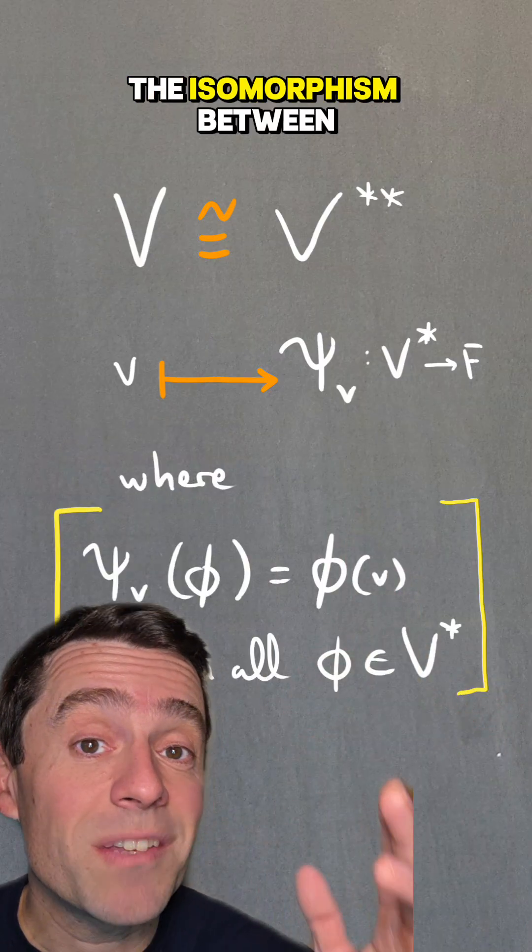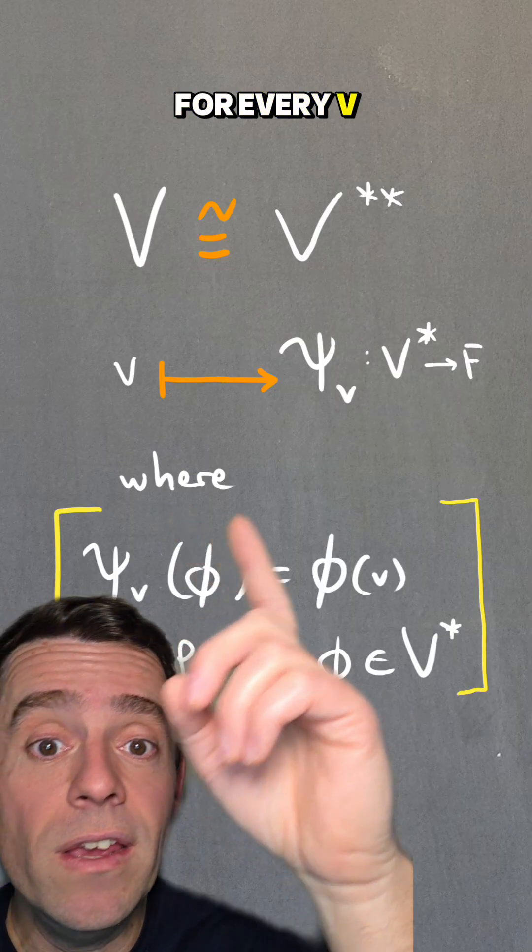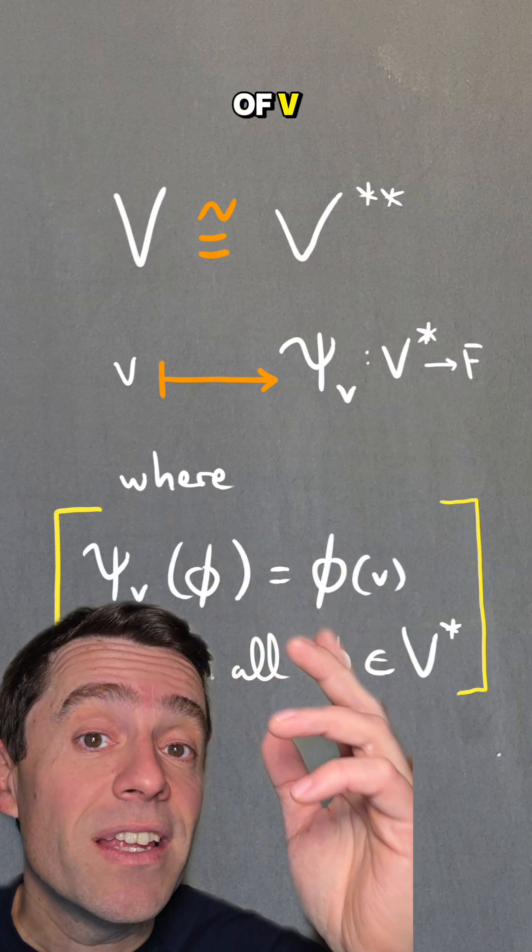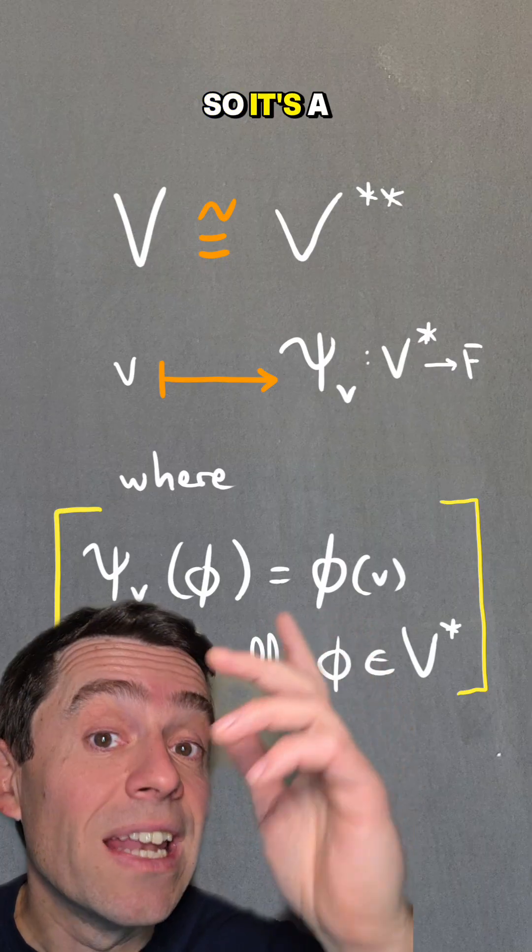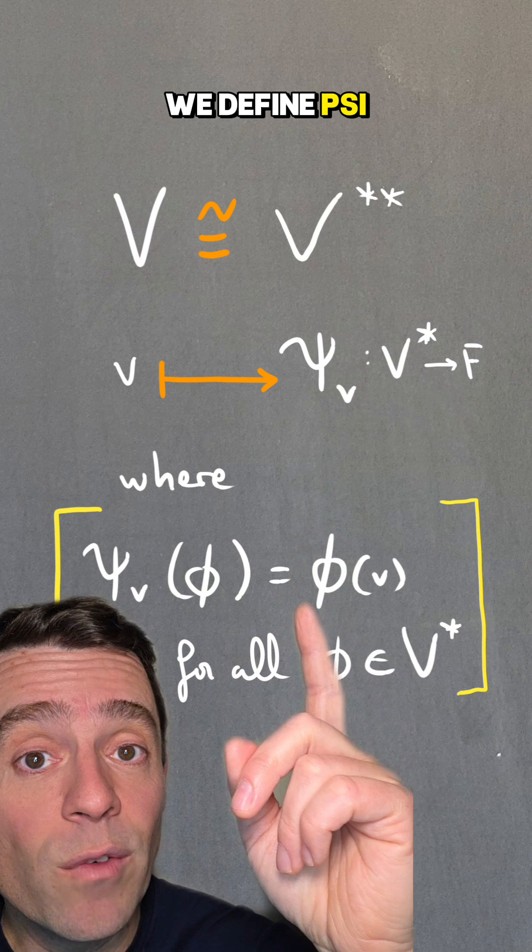The isomorphism between the vector space V and its double dual is defined as follows. For every V, I want to map it to an element ψ_v that is in the double dual. So it's a linear map from the dual space to the field F. And how do we define ψ of V?